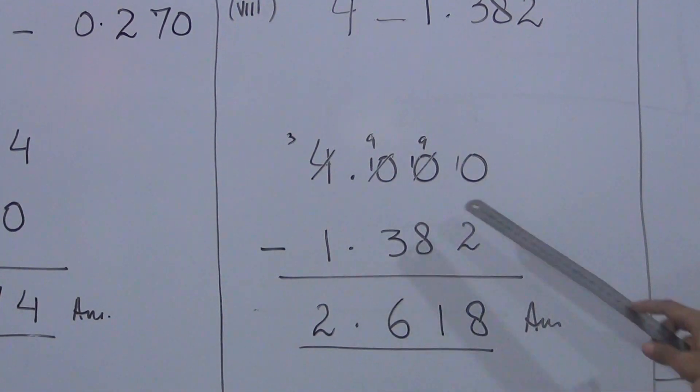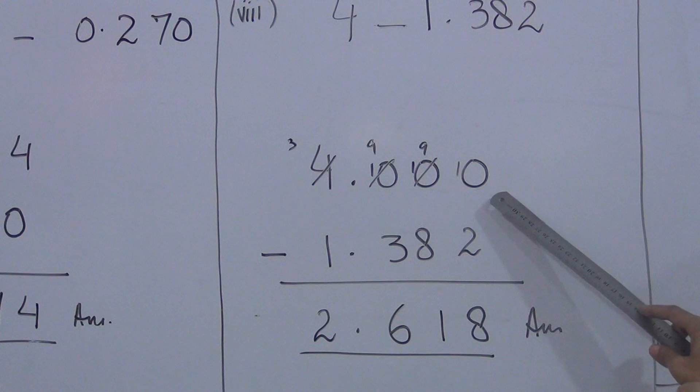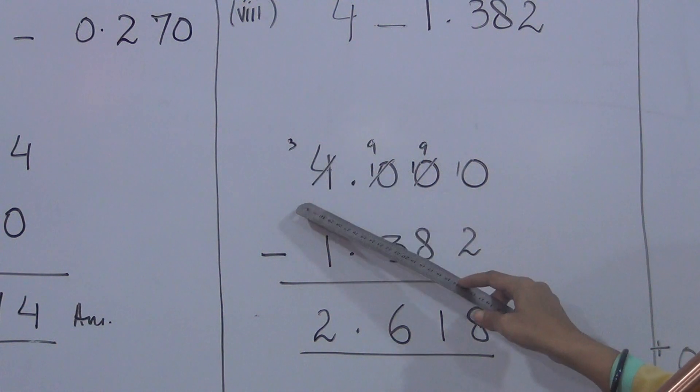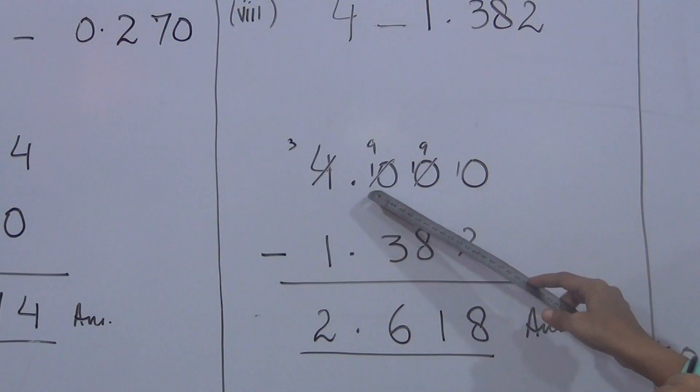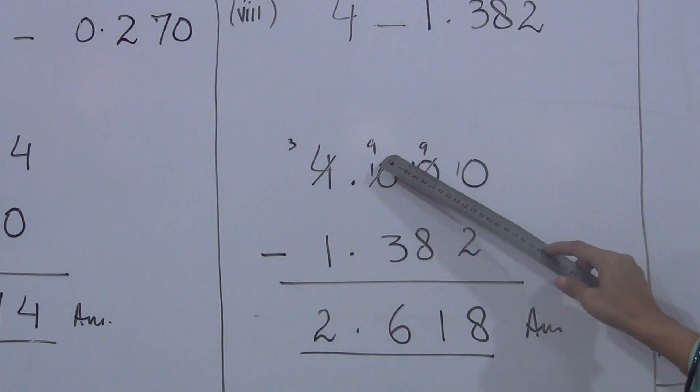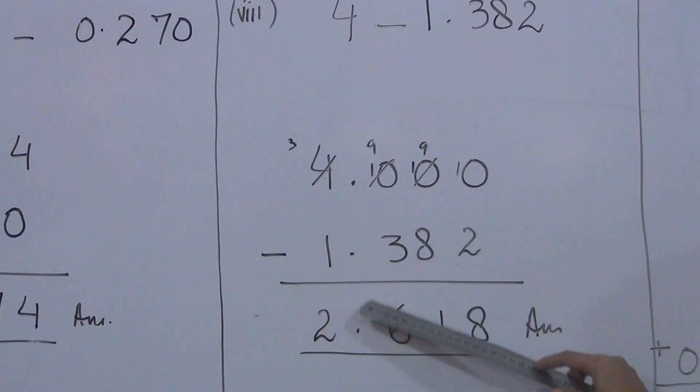Now subtract the numbers. Zero minus two is not possible. We borrow from the next place, but it's also zero. The next is also zero. So we take from four. Take one from four making it three, this becomes ten. Then give one from ten making it nine. Give one more making it nine. Now subtract two from ten equals eight. Nine minus eight equals one. Nine minus three equals six. Point below point. Three minus one equals two.